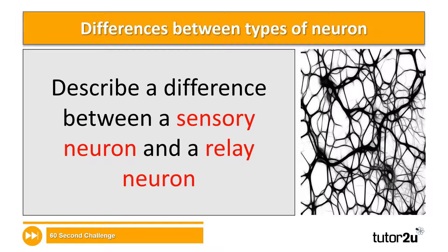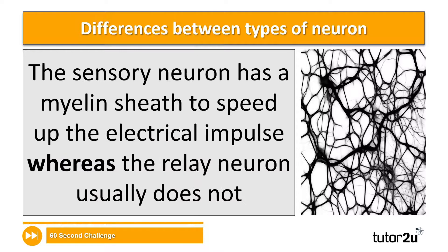Pause the video and have a go at this question. So I'm going to take you through the answer that I've got. This isn't the only difference in terms of the structure, but it's the difference that I've chosen to focus on. The sensory neuron has a myelin sheath to speed up electrical impulse, whereas the relay neuron usually does not.